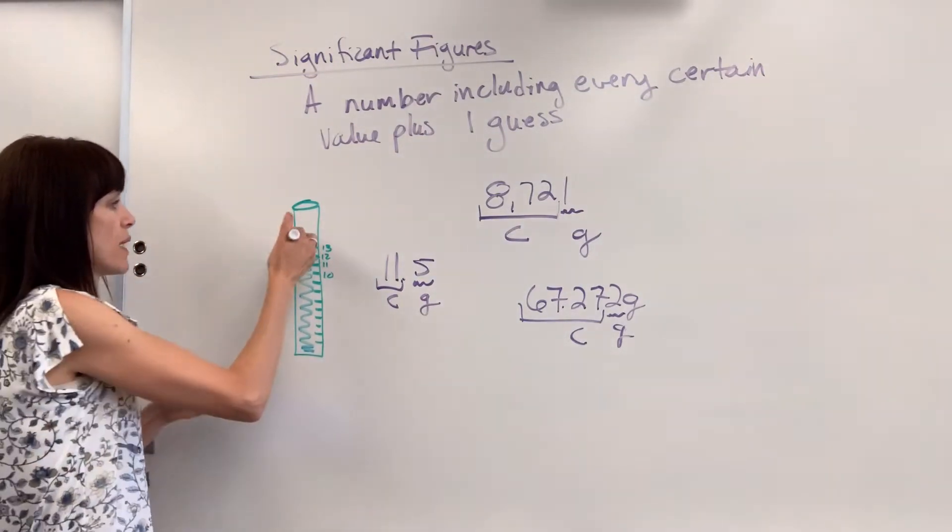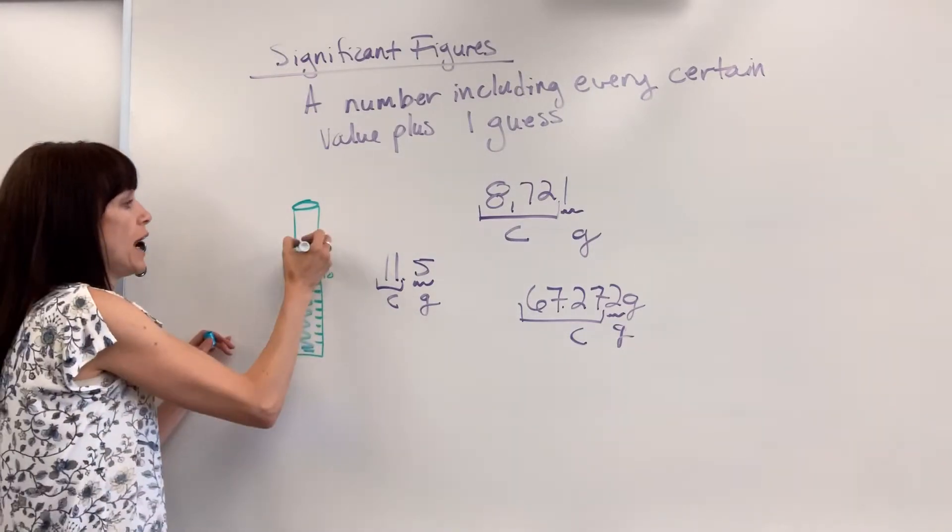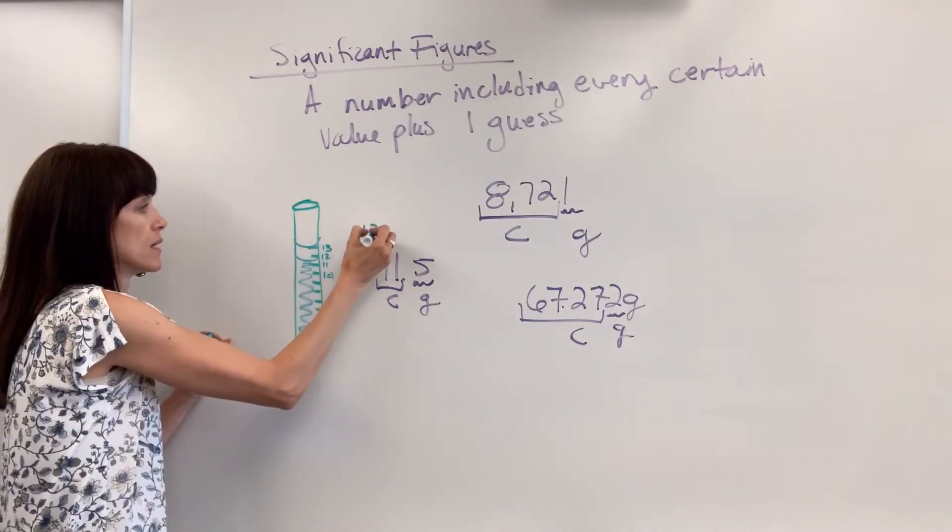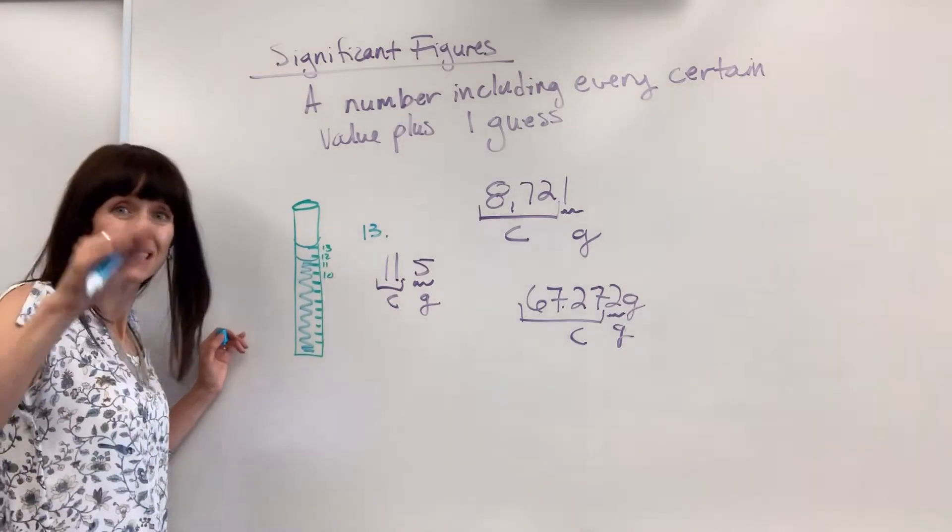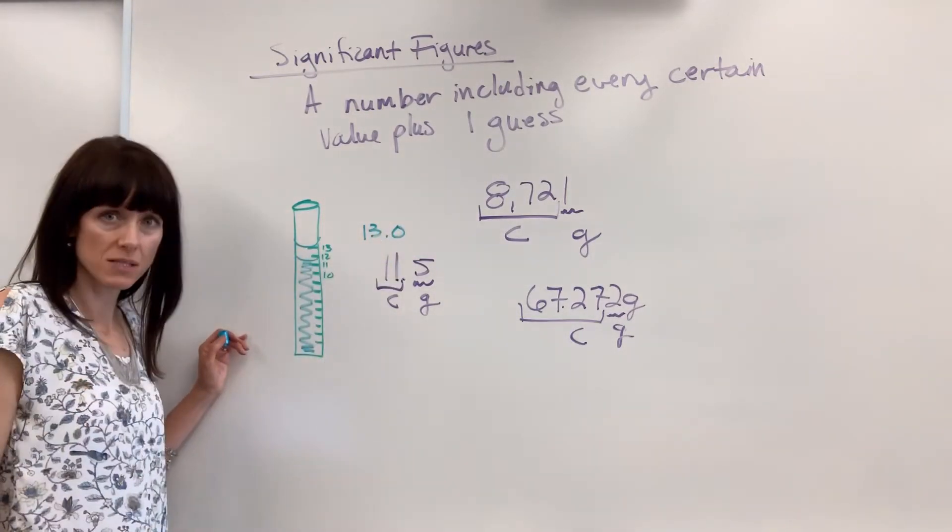If this had been spot on the 13, I know for certainty we're hitting that 13 line, and my guess is it's exactly on, so that would be a 0. Common mistake that students make.